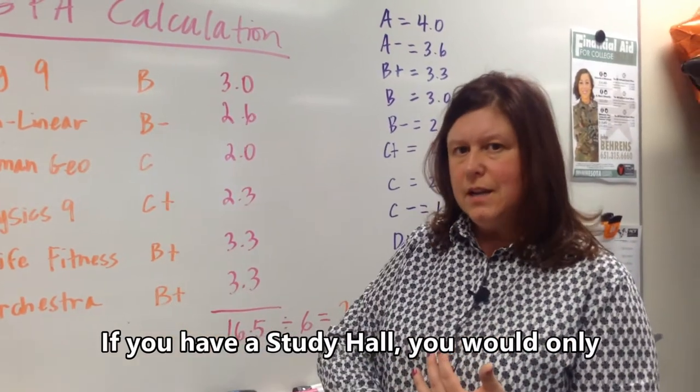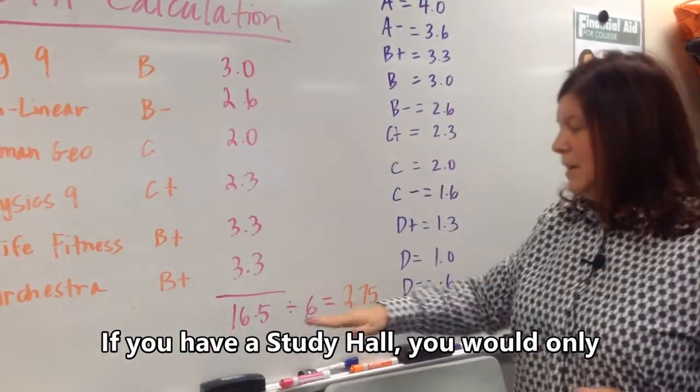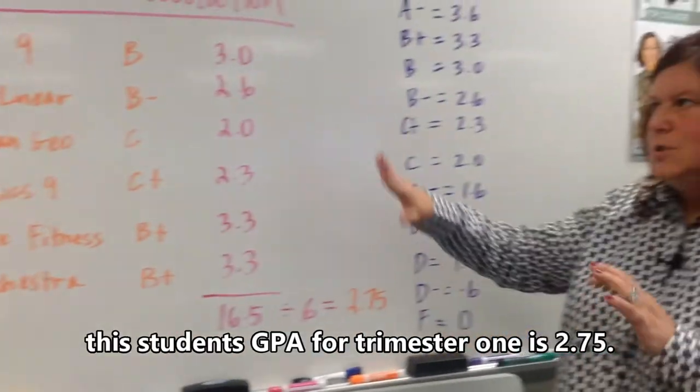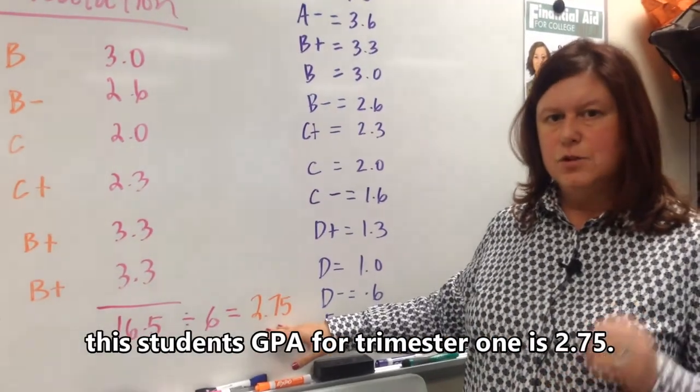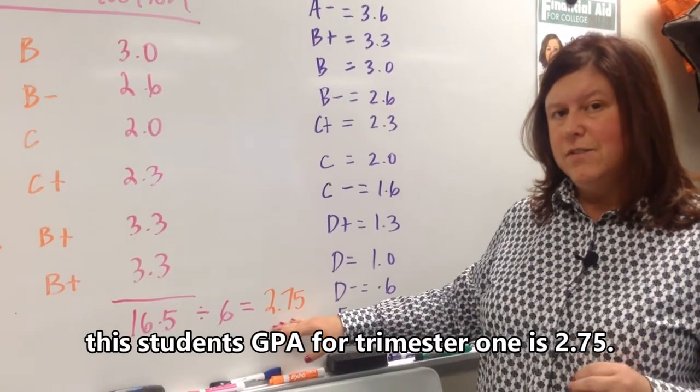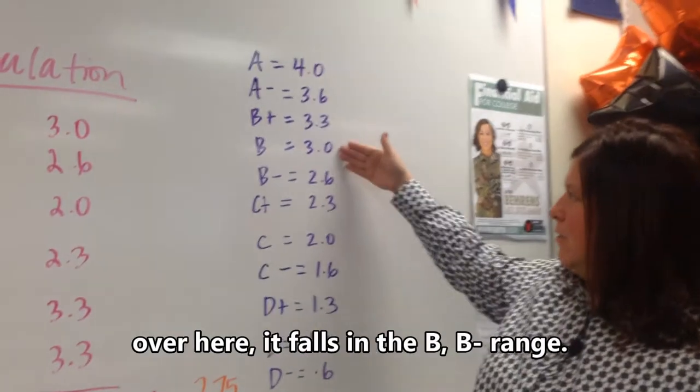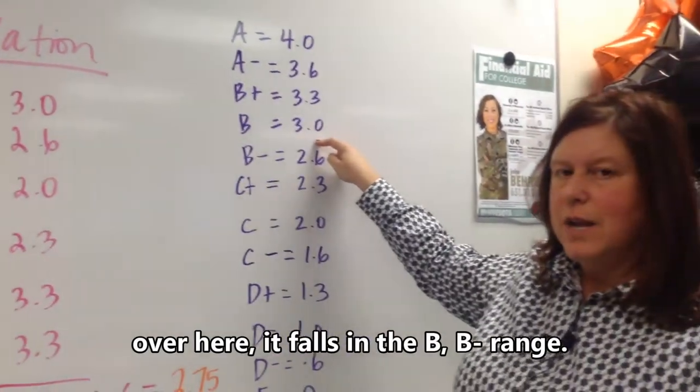If you have a study hall, then you would only have 5 classes. So we're going to divide by 6 because you had 6 classes, and this student's GPA for trimester 1 is 2.75. When we look at that GPA and we compare it over here, it falls kind of in the B, B-minus range.